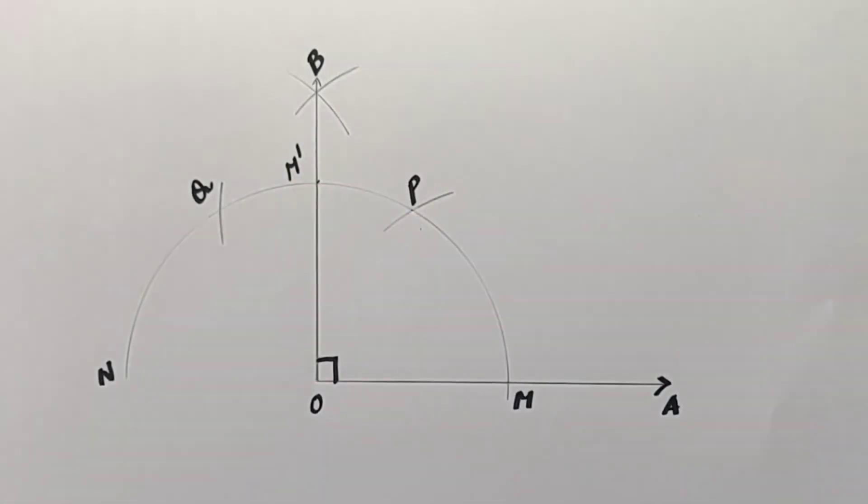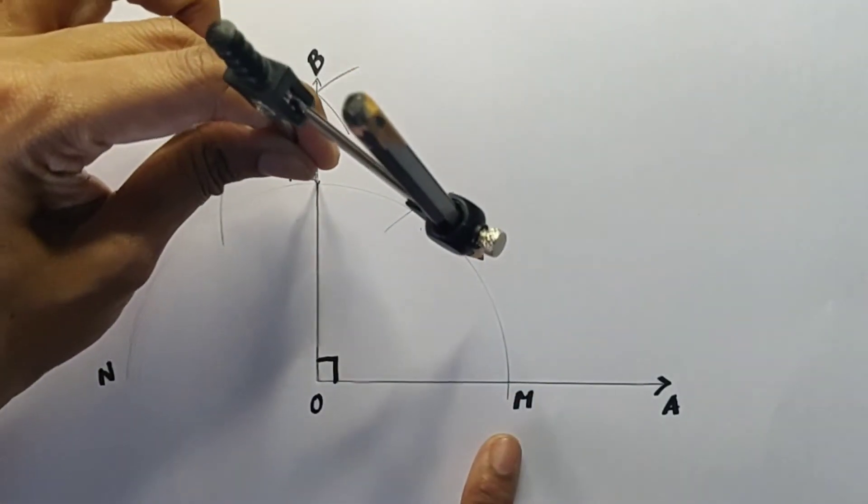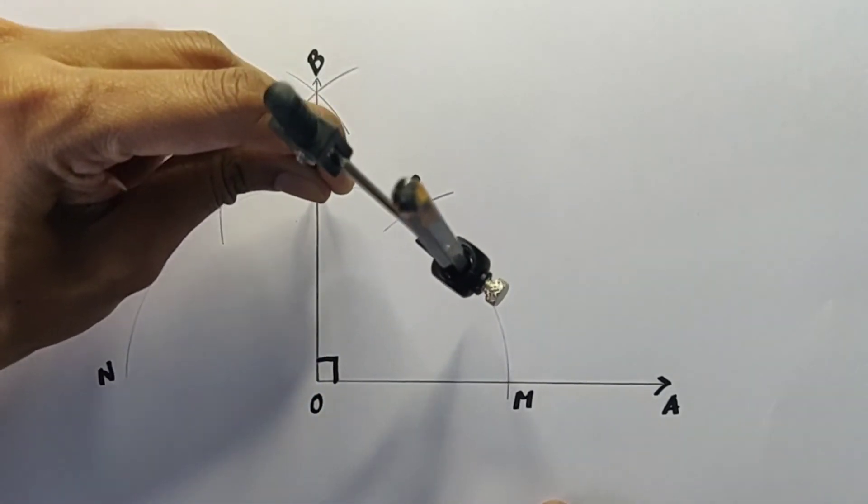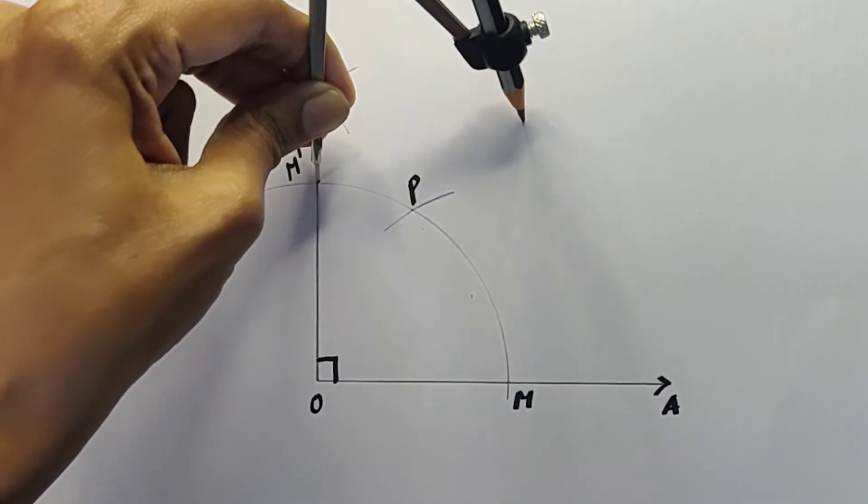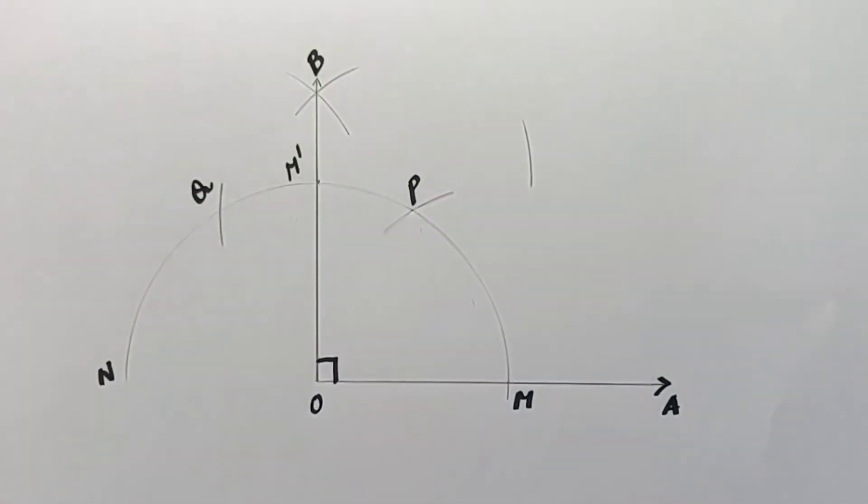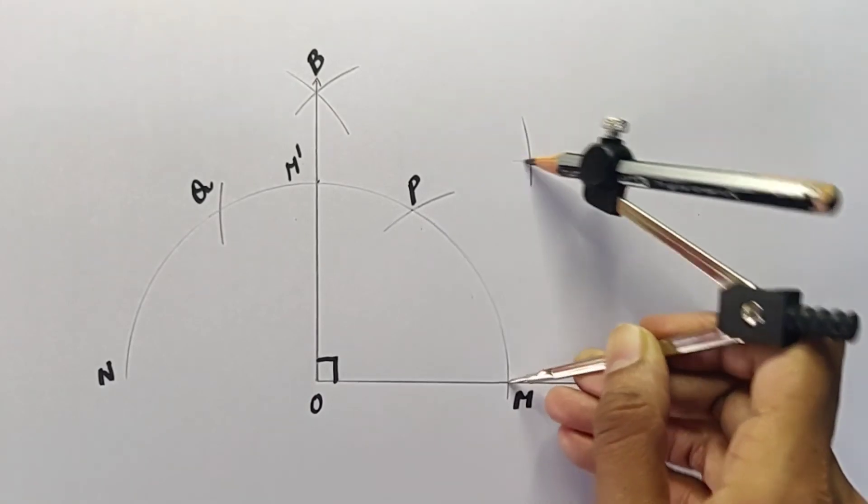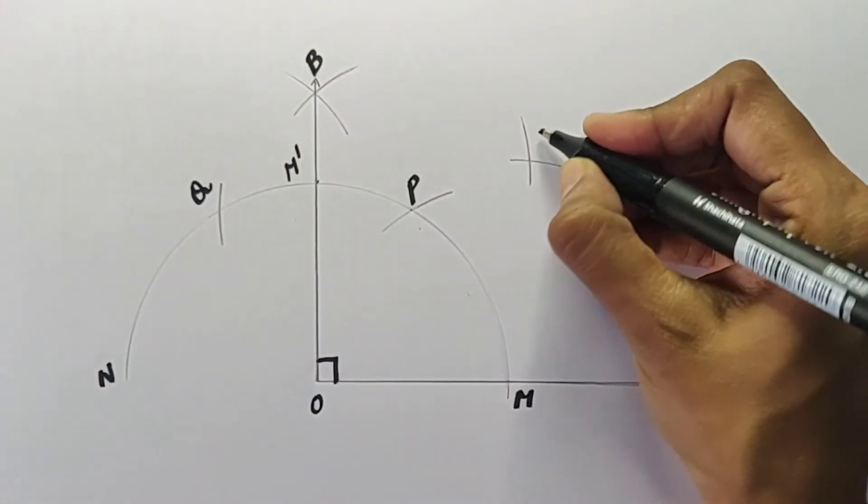With a radius more than half the length of M and M', draw an arc above and with the same radius, with M as center, cut the previously drawn arc. Let's label this point as C.